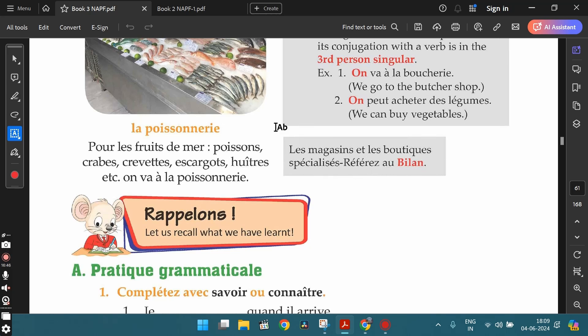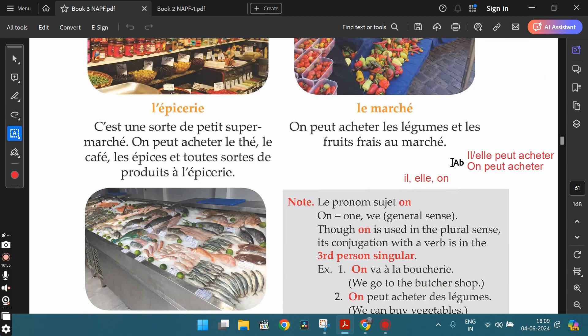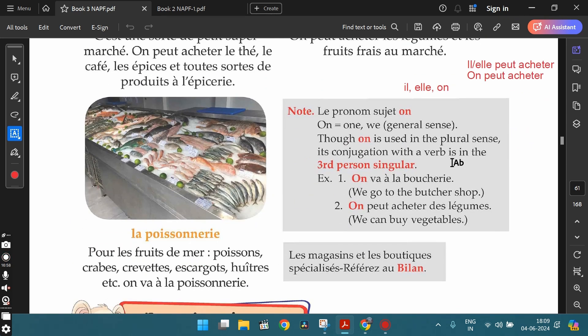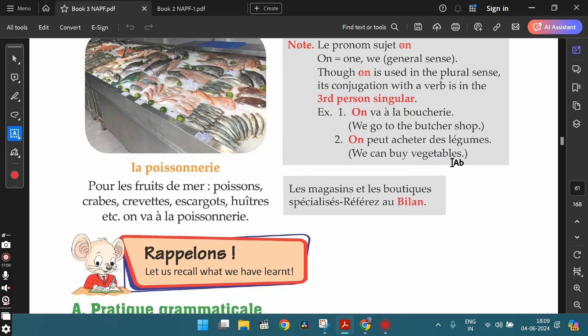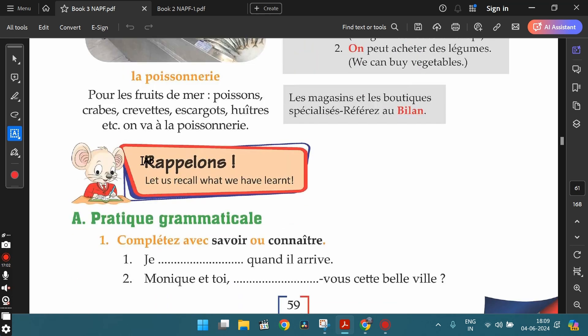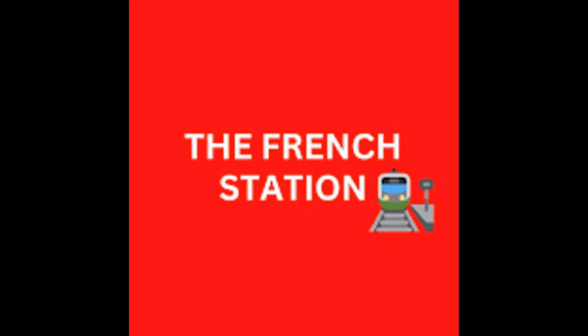For more vocabulary on different kinds of shops and specialized boutiques, you can refer to the bilan section. With this, we complete the grammar topics from lesson 5. In the next video, let's discuss the exercises. Thank you so much for watching the video. Please subscribe to The French Station to get notified of upcoming videos. Like it and share it with your friends as well. Until then, au revoir — see you soon!